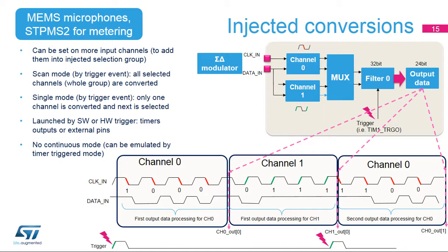Injected conversions have higher priority. They can interrupt regular conversions immediately and start just after being triggered. Any of the input channels can be assigned to an injected channels group. There are two modes: scan mode and single mode. In scan injected mode, all channels from the injected channels group are converted from the lowest to the highest channel number when a trigger occurs. In single injected mode, only one channel is converted per trigger, with the next channel selected for the next conversion. Injected conversions can be launched by software or by hardware, from timers or an external pin, and cannot run in continuous mode, but this can be emulated using a periodic timer trigger.